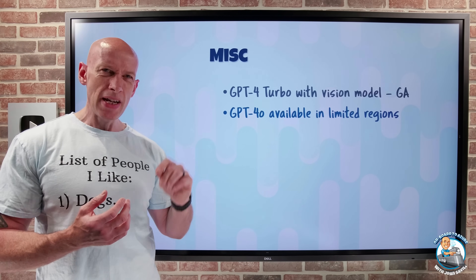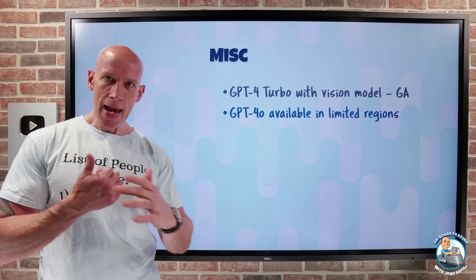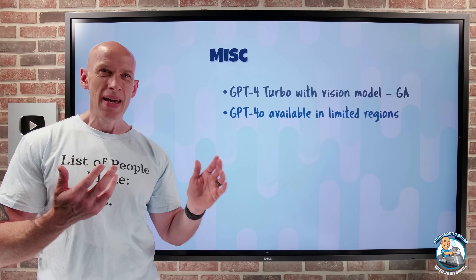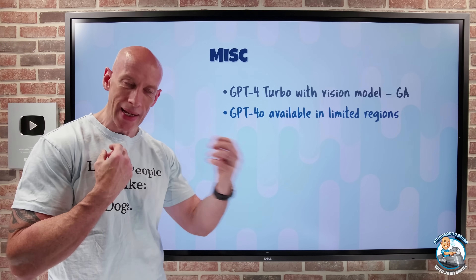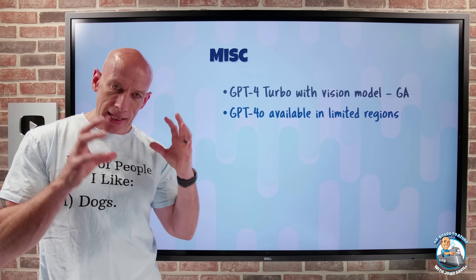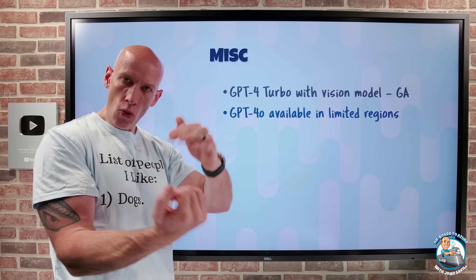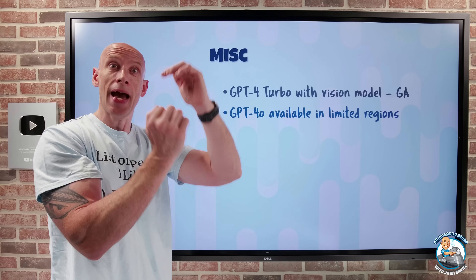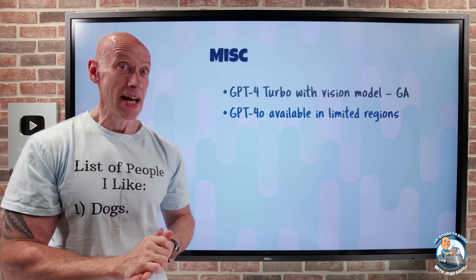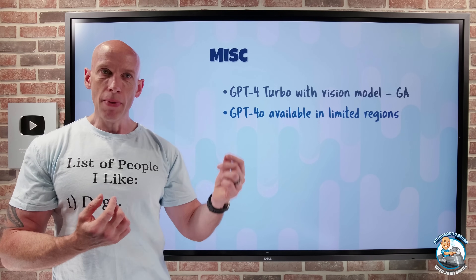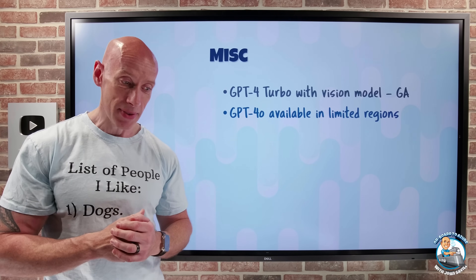But probably more exciting is GPT-4o — O is for Omni. This is available in a limited number of regions, currently two US regions. The huge thing here is it handles text, images, video, and audio in near real time — the latency between its responses is the same as human latency, enabling truly interactive conversations. It has a single vector space model that supports all of those multi-modalities — text, images, video, audio — not separate models for each, but one vector space handling all modalities. If you've seen the demos, it's just like interacting with a human being — a true personal assistant type capability.